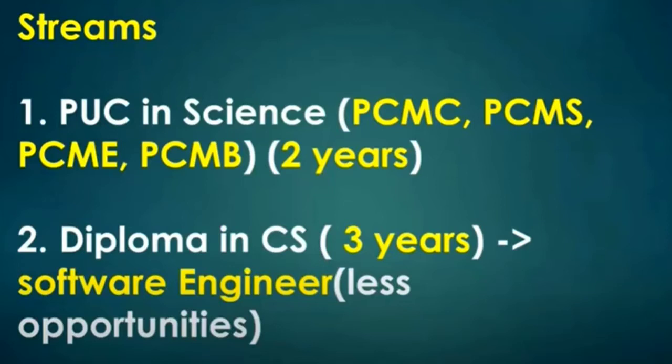Diploma in CS is 3 years. Diploma course is 3 years, PUC is 2 years. If you are going to get job opportunities, or if you are looking for a salary or opportunity, you should consider both paths carefully.